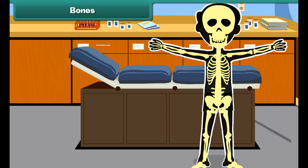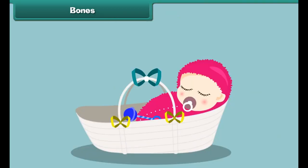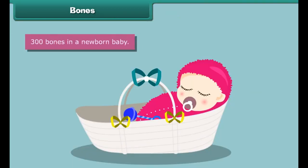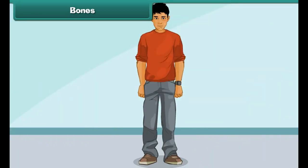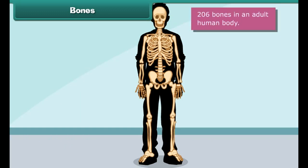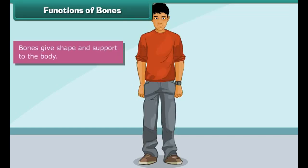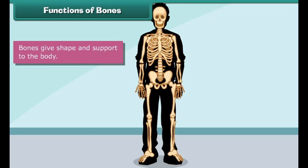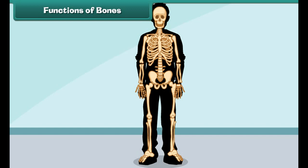Every single person has a skeleton made up of many bones. These bones give your body a structure. At birth, a newborn baby has about 300 bones, whereas an adult human body contains approximately 206 bones.